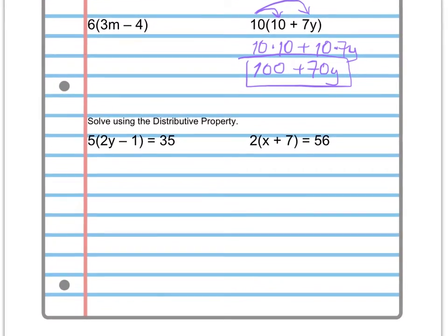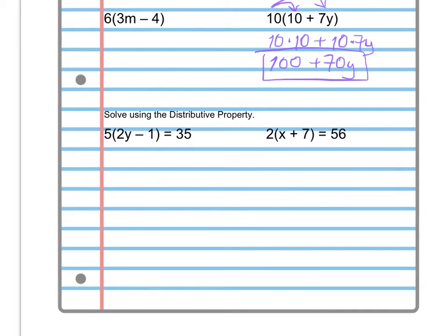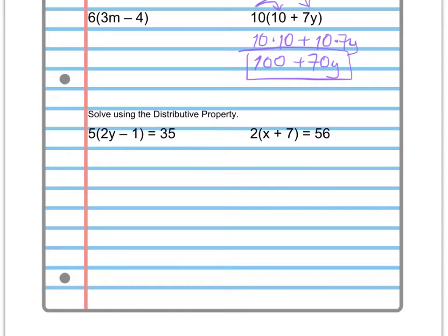It says solve using the distributive property. Okay, this is the same idea. You're going to use the distributive property to distribute the 2 into the x and the 2 to the 7. You're going to end up with a term here with the 2 multiplied by the x plus a term here with the 2 multiplied by the 7.